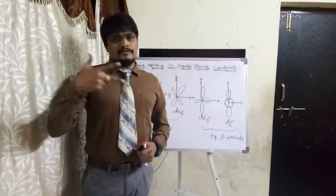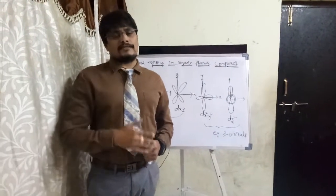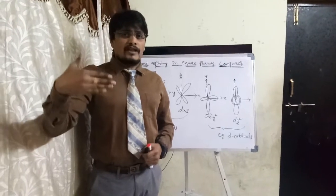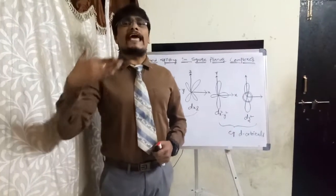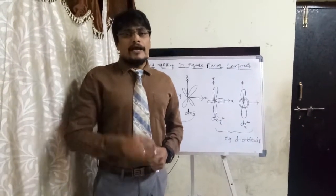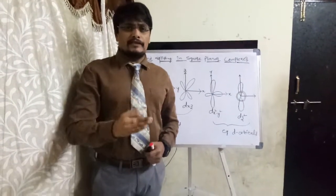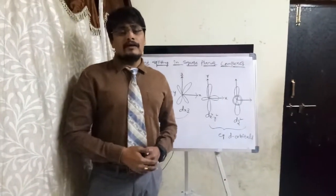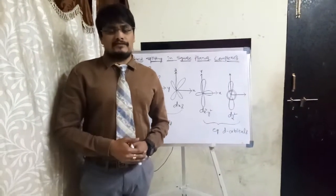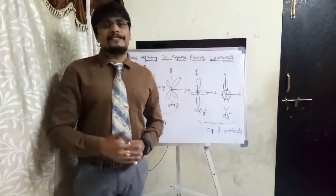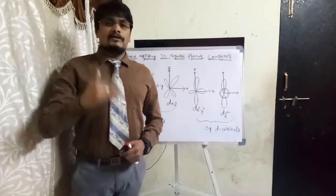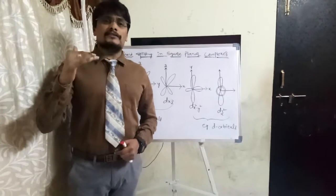In square planar complexes, four ligands approach the metal along the x and y axes. The electrons which are part of the ligands approach the electrons on the metal along the x-axis and y-axis. Since the repulsions are directly proportional to energy, those d orbitals which experience more repulsion will occupy the highest energy level.